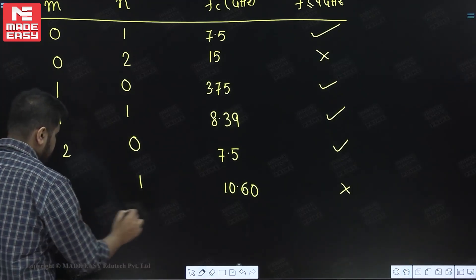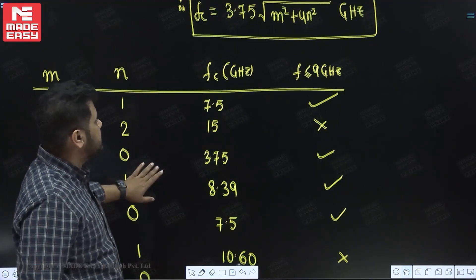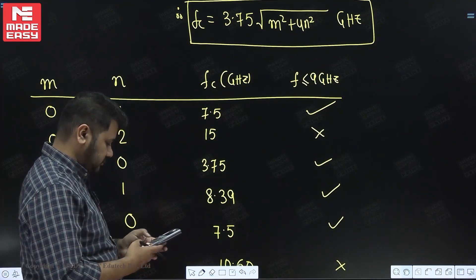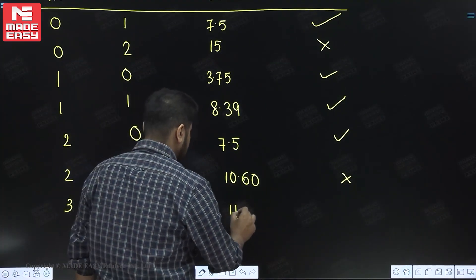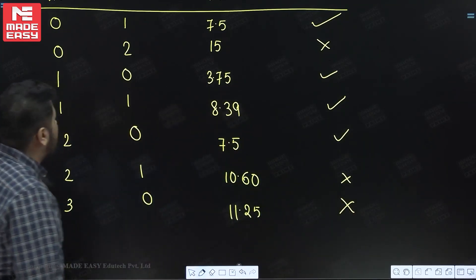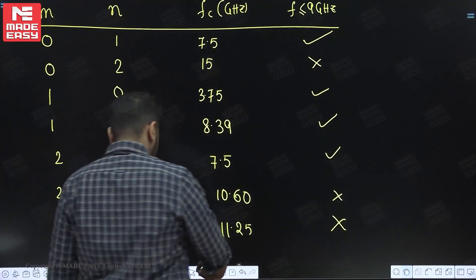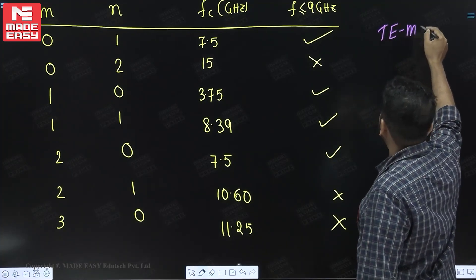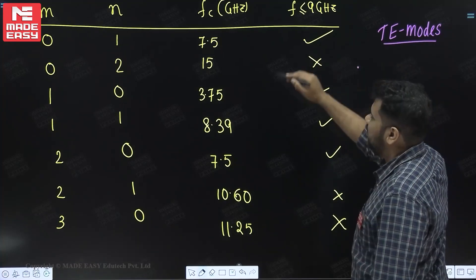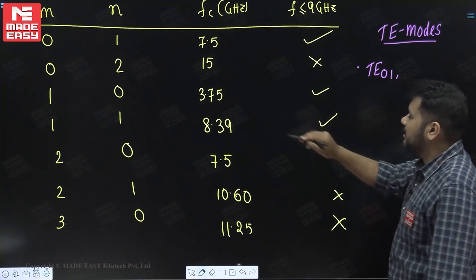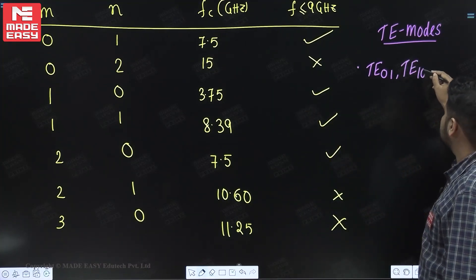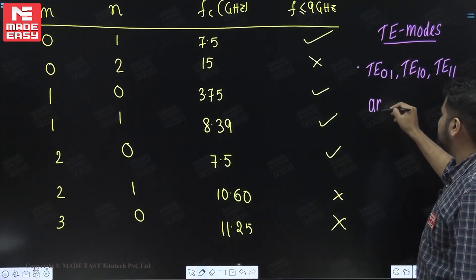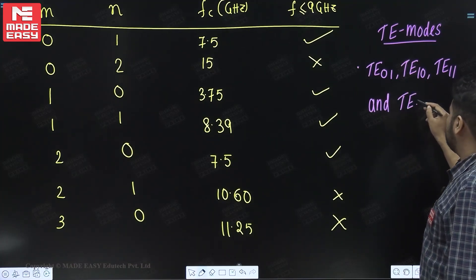For m=3, n=0: FC = 3.75 times 3 = 11.25 gigahertz. This is greater than 9 GHz, so mode (3,0) is also not allowed. So those are the only modes that are allowed.